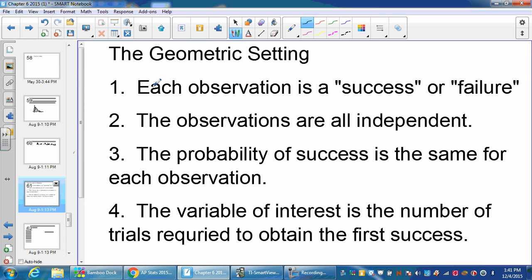A geometric distribution has some of the same properties. You have to deal with either success or failure. All of the observations have to be independent. The probability of success is the same for each observation. So all those are the same.